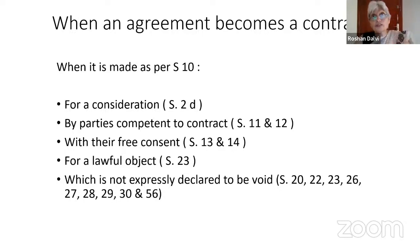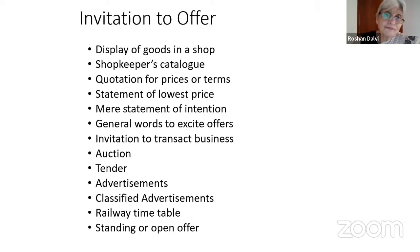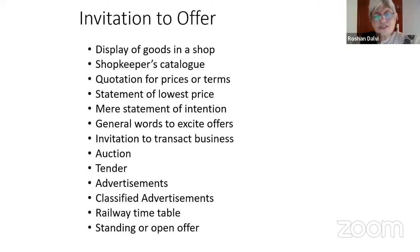The contract should not be expressly declared void under the Indian Contract Act, which is declared under Sections 20 to 30 essentially, and then Section 56 when it becomes an impossible contract. There are certain invitations to offer — it is not an offer, it is something prior to the offer. These things, very interestingly, are invitations to offer.